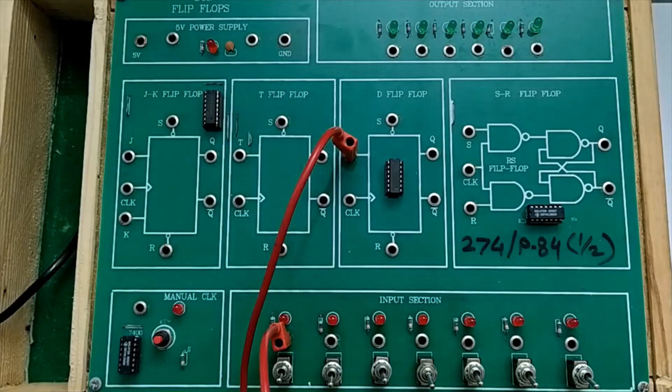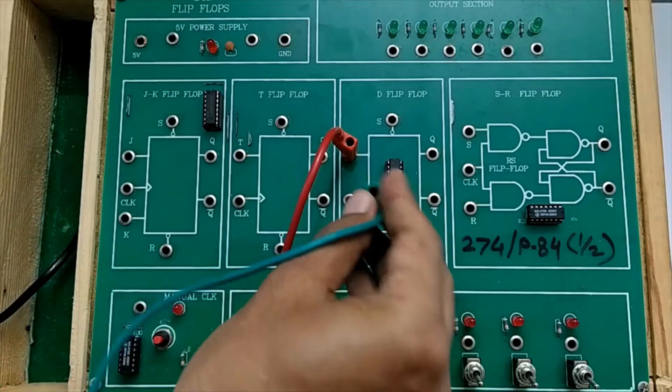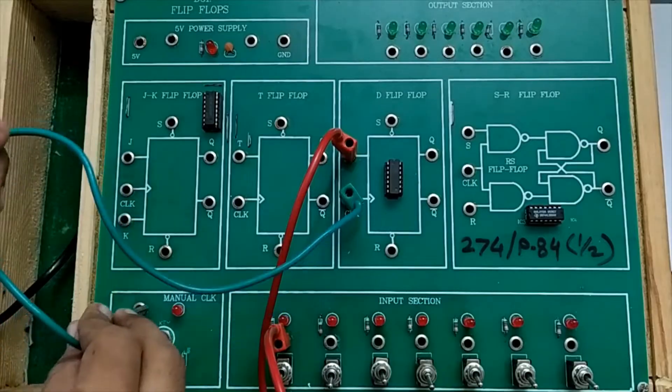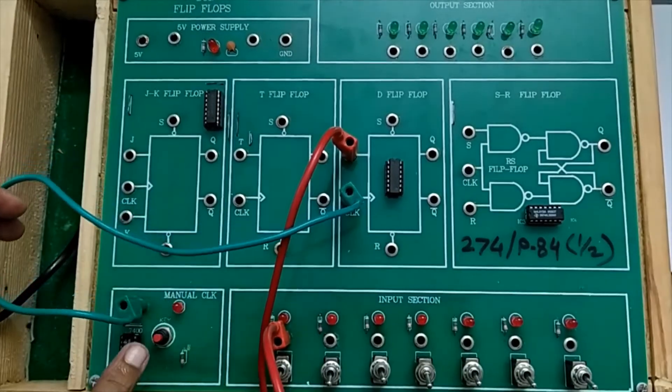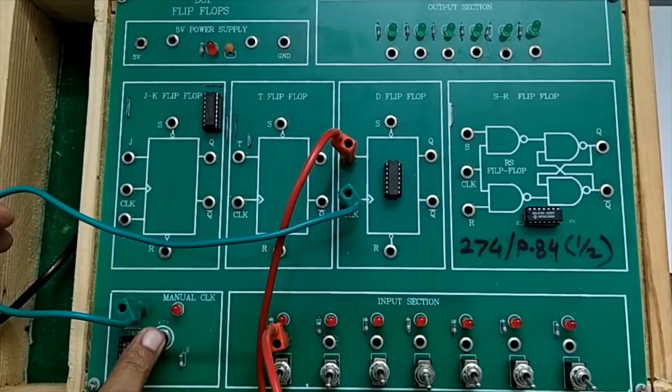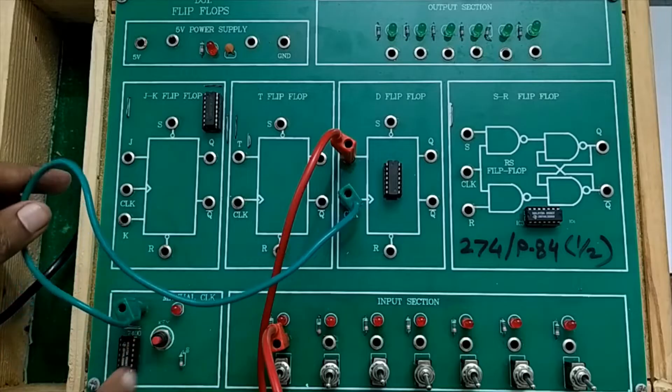Same is the case with remaining inputs. The clock signal is here and a facility of manual clock is provided through this IC. By pressing this switch I can manually send the clock signal to the clock pin of D flip-flop.